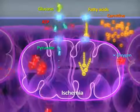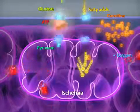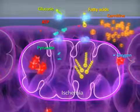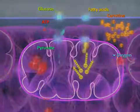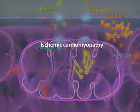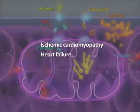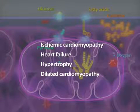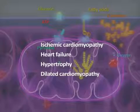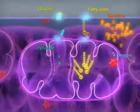Disorders of glucose metabolism and diabetes can cause damage just as serious as ischemia. Such diseases as ischemic cardiomyopathy, heart failure, hypertrophy, and dilated cardiomyopathy correlate highly with disorders of energy metabolism in the heart.